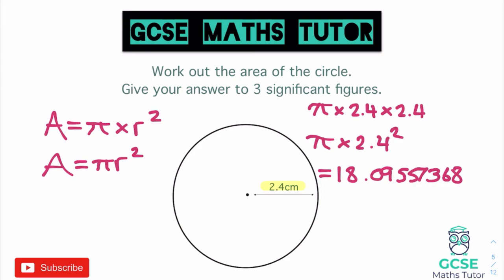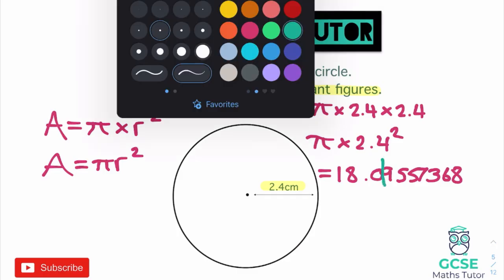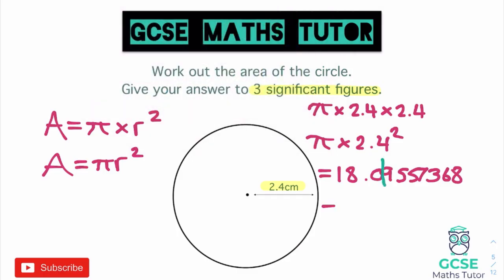Always write down the full number first. This question wants three significant figures: 1, 8, 0 — chop after the 0. There's a 9 after it, so it rounds up to 18.1. Since this is an area, the units are centimetres squared. So the final answer is 18.1 centimetres squared.